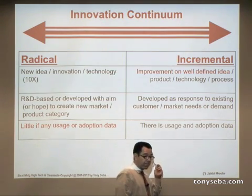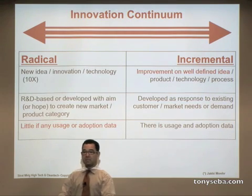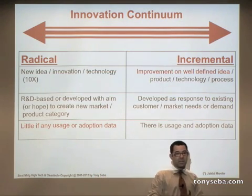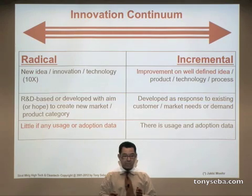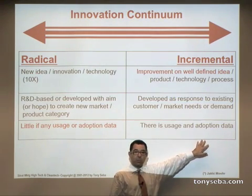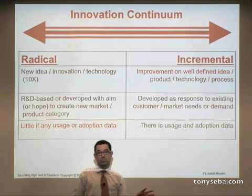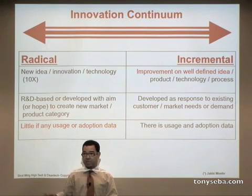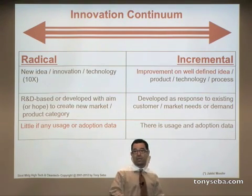Incremental innovation is an improvement on a well-defined idea, technology, or product — like a 5% improvement in router speed or a 10% improvement in the sharpness of a television. Most innovation actually happens in the incremental space. In solar, even, it's been incremental for 40 years — roughly 7–10% improvement per year — and after 30 or 40 years, it makes for what feels like a radical breakthrough.